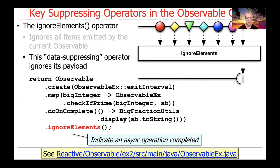You'll see how this is used in the case study at the end of the lesson, where we emit a bunch of big integers to check if they're prime, use doOnComplete to print debugging information when done, and finally use ignore elements to return a completable that signals to the async task barrier that we're done with our test.